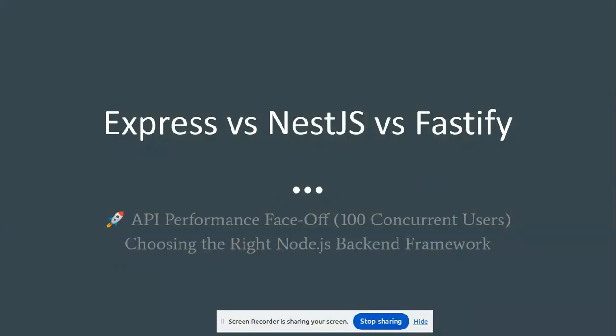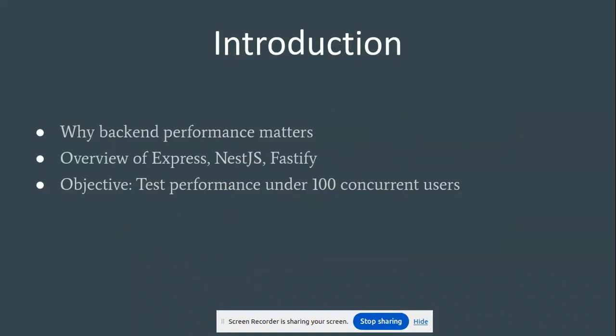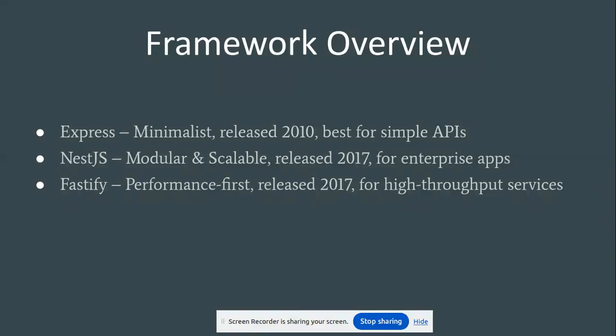API performance phase of 100 concurrent users — choosing the right Node.js backend framework. First, an introduction on why backend performance matters, and an overview of Express, NestJS, and Fastify. The objective is to test performance under 100 concurrent users. Framework overview: Express is minimalistic, released in 2010, best for simple APIs.